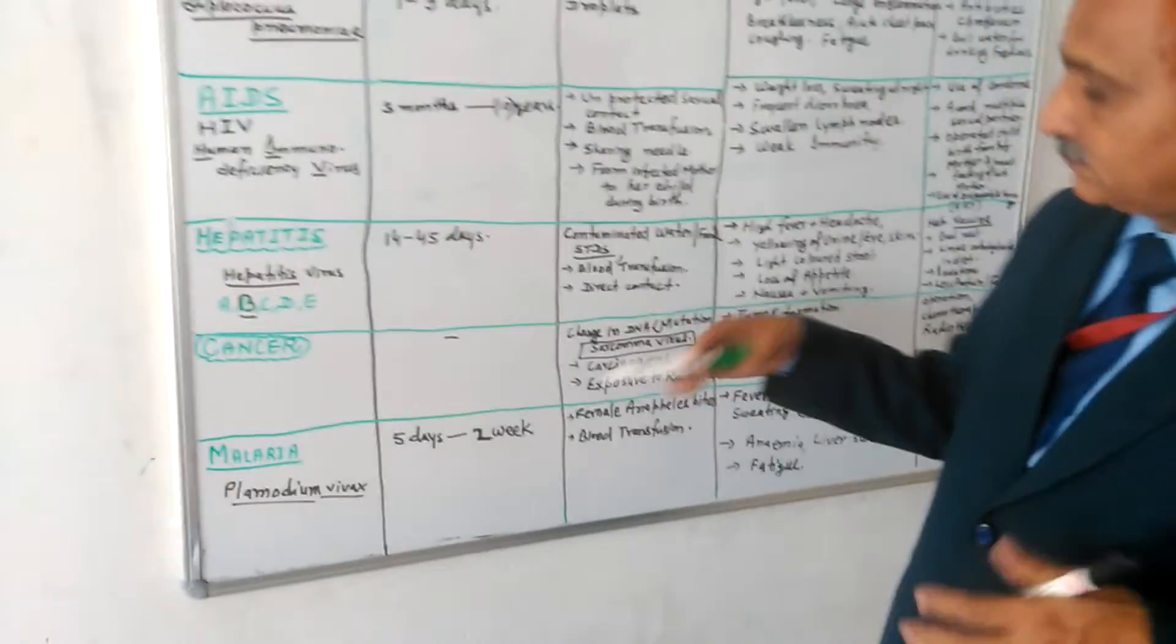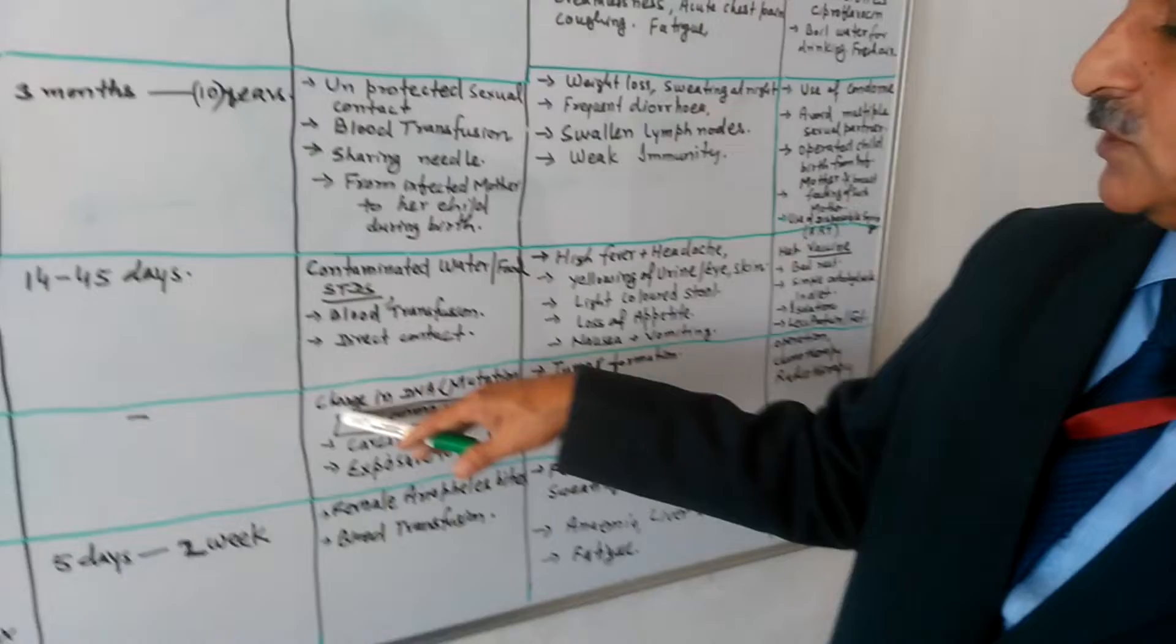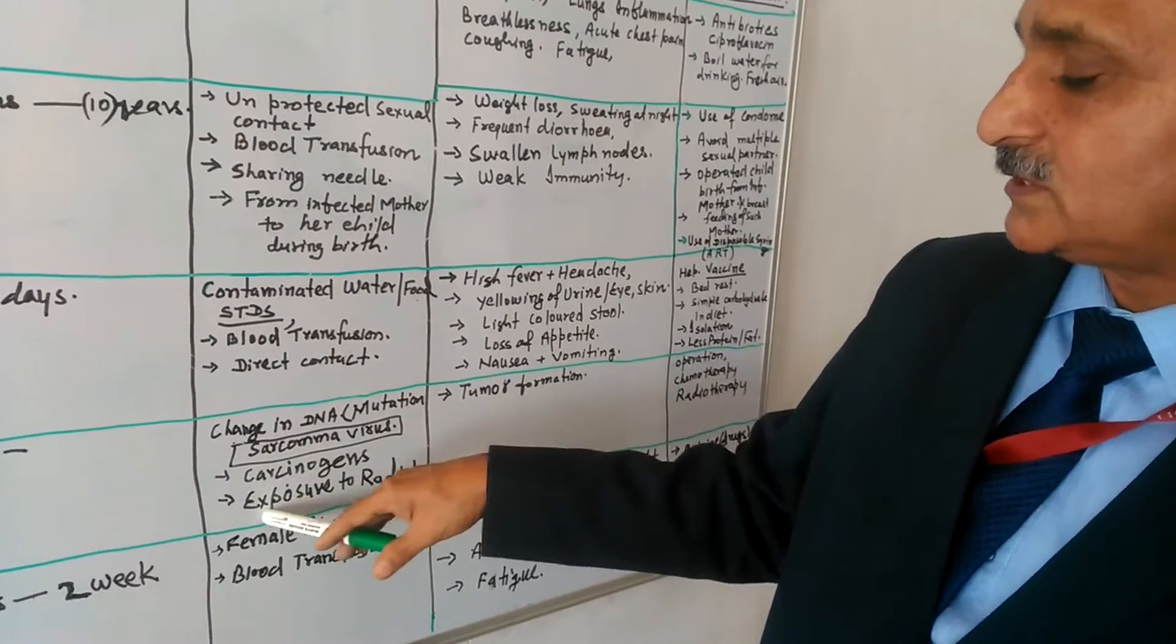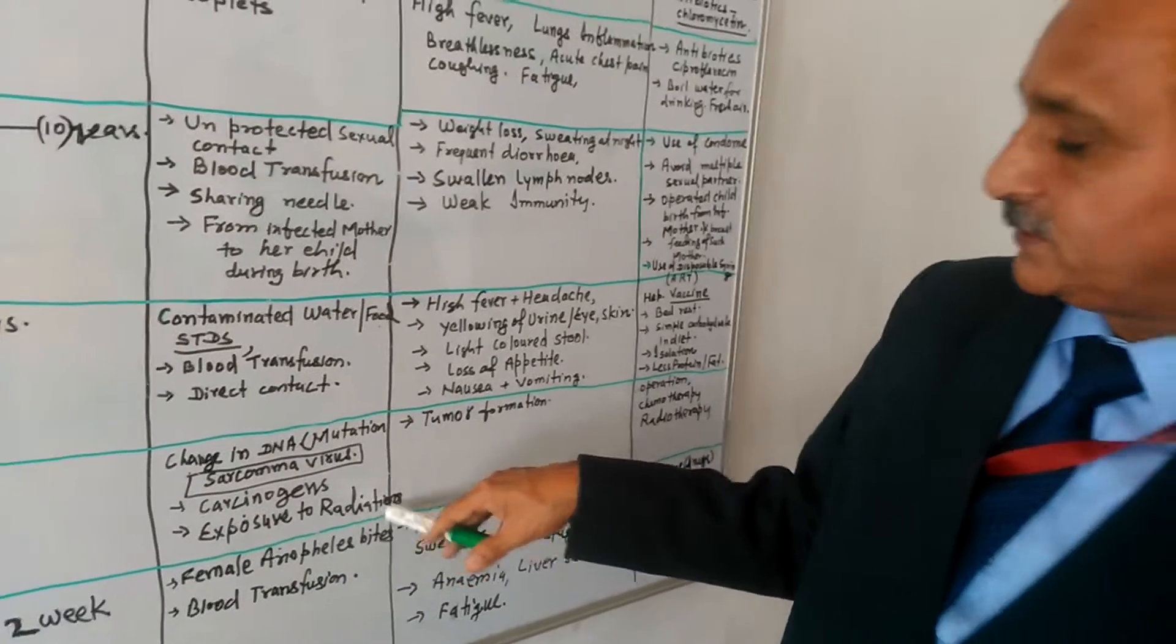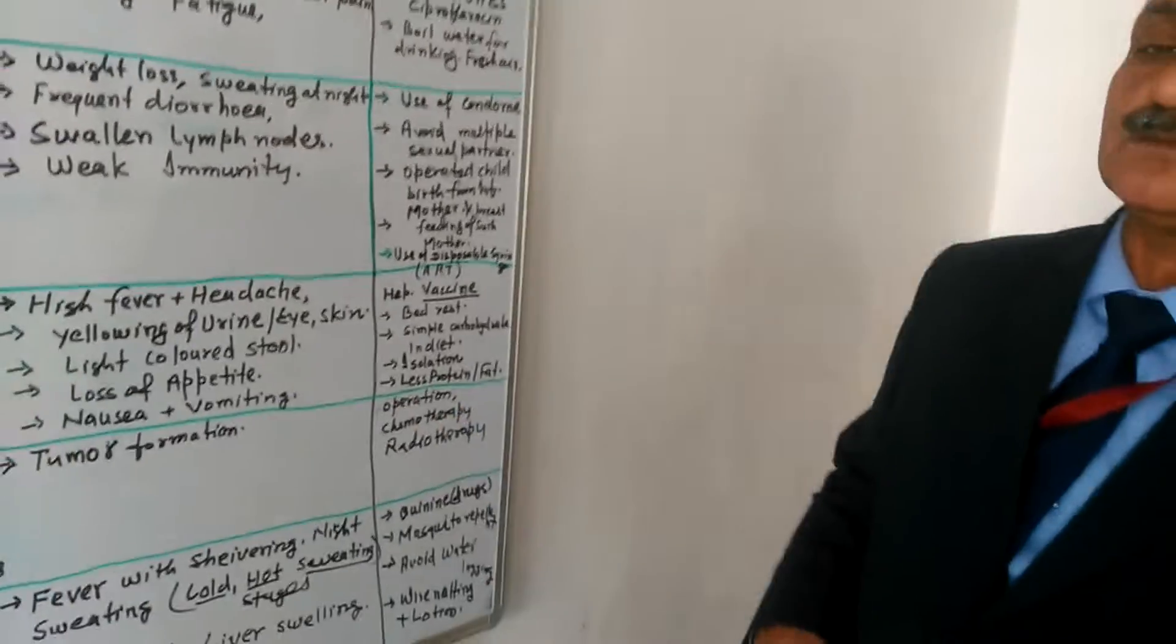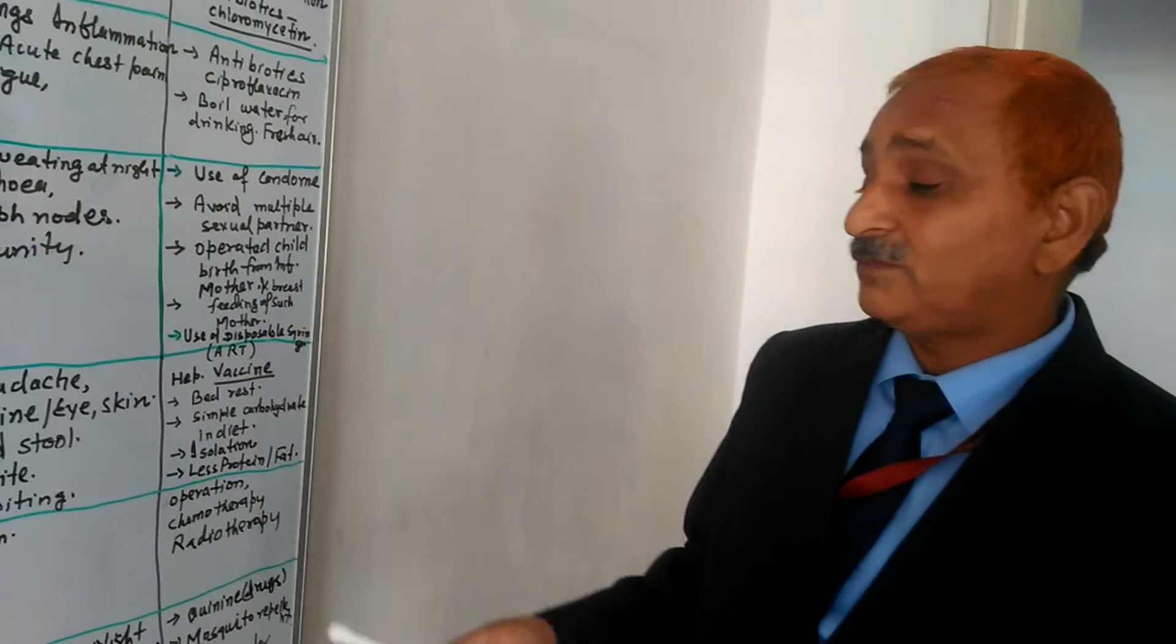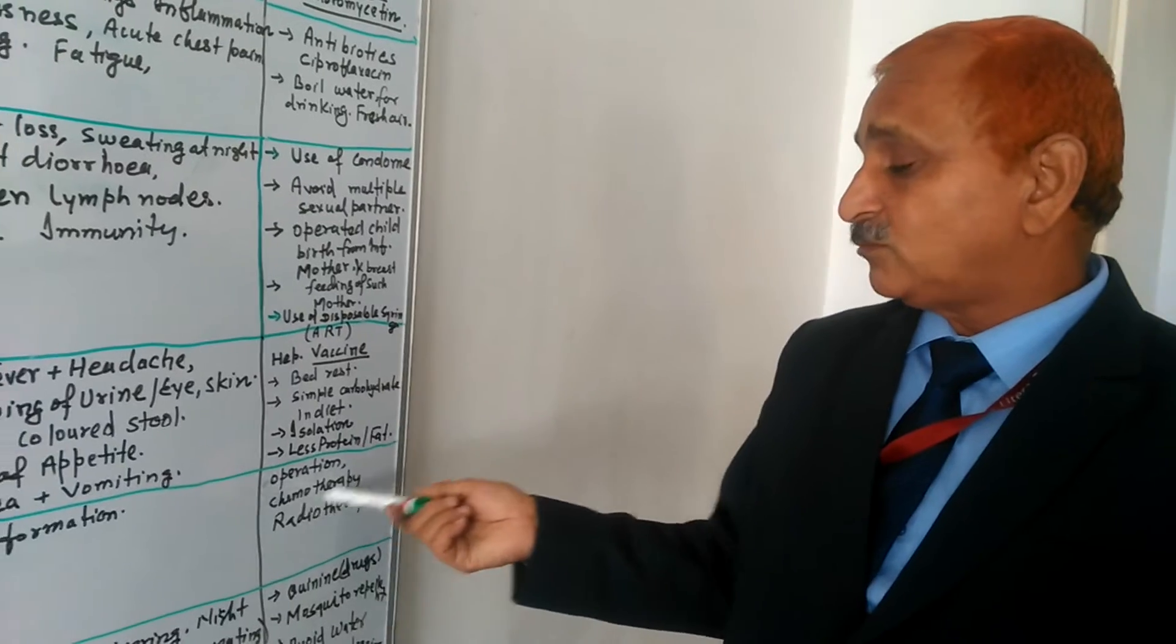Cancer is a different type of causes are there. Many causes are there. So the change in DNA multiplication that is the mutation and carcinogen substance exposure of the radiations are the causes. Tumor forms that is the symptoms, pain and further related to the organ where the tumor is developing. The different type of complication comes. Operation is there.